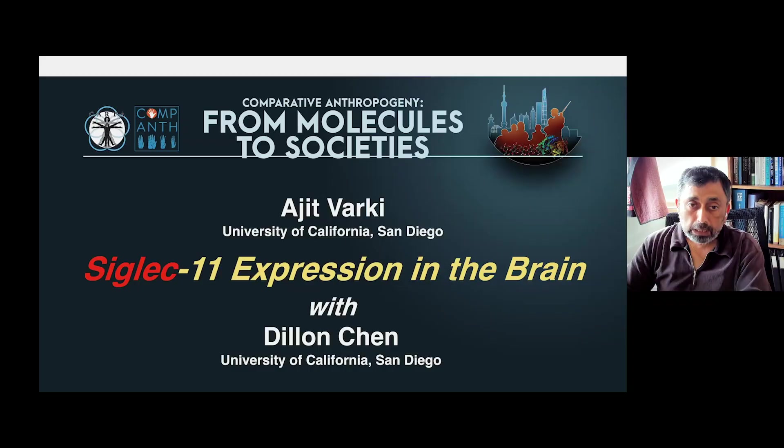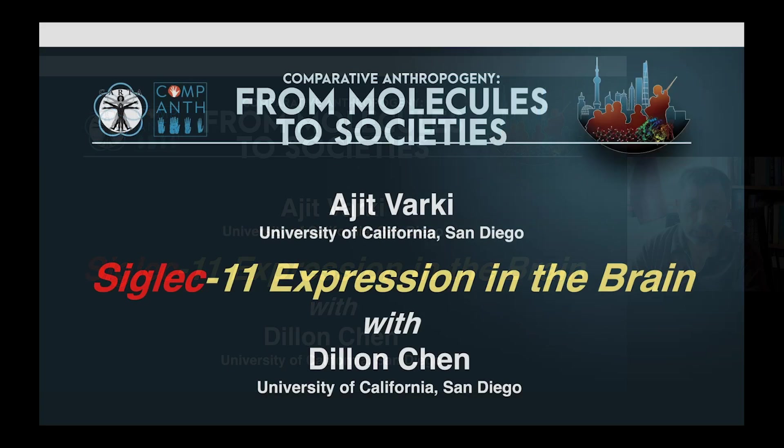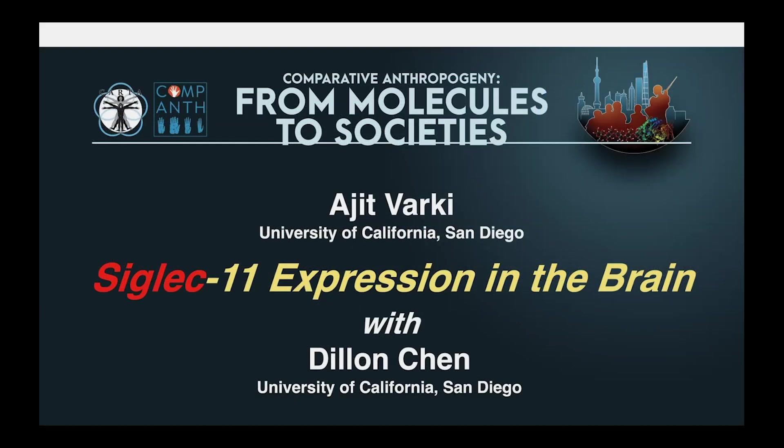In keeping with the theme of comparative anthropogeny, I'm going to talk about a protein called Siglec-11. It's found in the human brain, but not in the chimpanzee brain or the brains of other great apes. This is a presentation I'm making along with many people in my group who worked on this topic over the years and others in the literature — and this particular one is Dylan Chen, a young assistant professor in neuroscience.